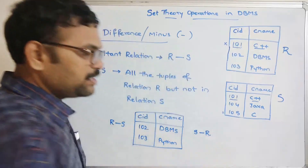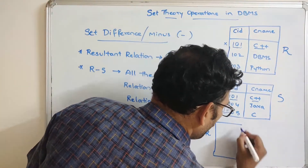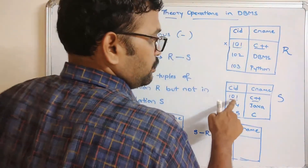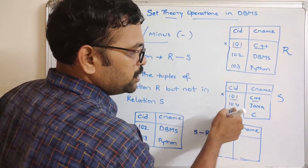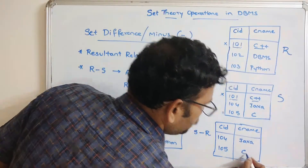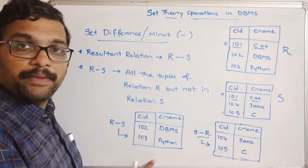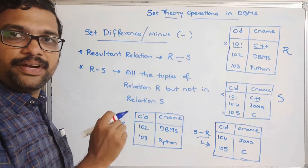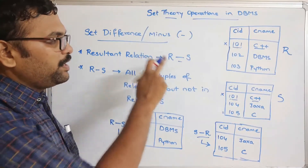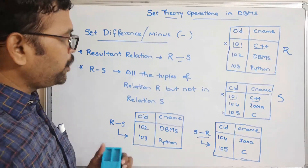Similarly, S minus R contains all the tuples of relation S that are not in R. Course ID 101 is available in R, so it is excluded. 104 Java is not in R, so it is included. 105 C is also not in R, so it is included. The result of S minus R is: 104 Java, 105 C.